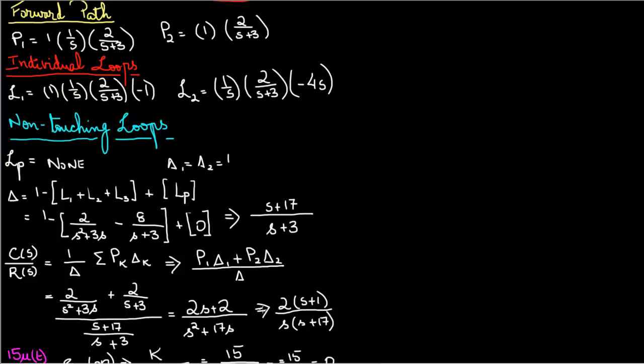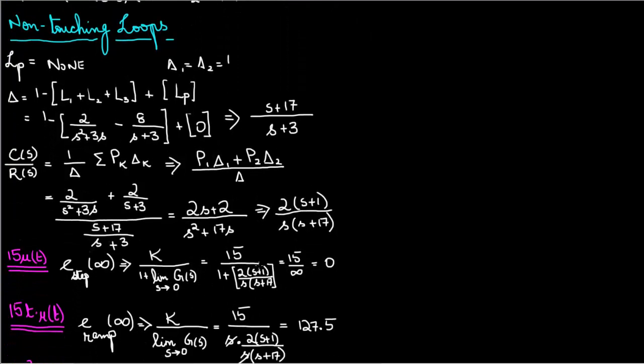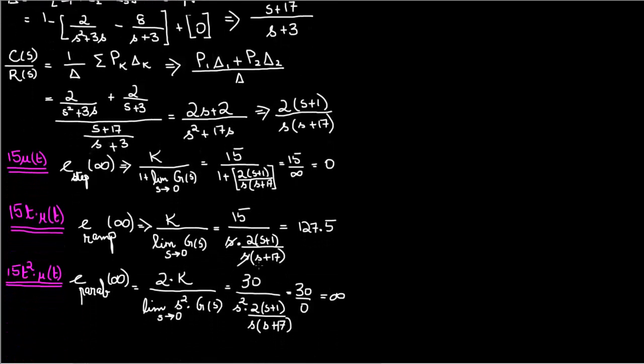Now once you have this form of the equation you would use the step input functions they gave us in the problem to find your steady state error. So first one is going to be our step which is 15 times u of t. And if you look in your book or if you have a table for these values, for the step it's k divided by 1 plus the limit when s is approaching 0 for the transfer function.